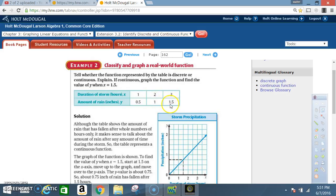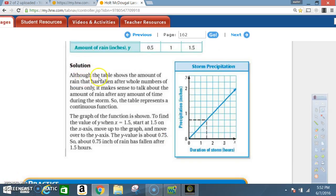Solution: Although the table shows the amount of rain that has fallen after whole numbers of hours only, it makes sense to talk about the amount of rain after any amount of time during the storm. So the table represents a continuous function. The graph of the function is shown.